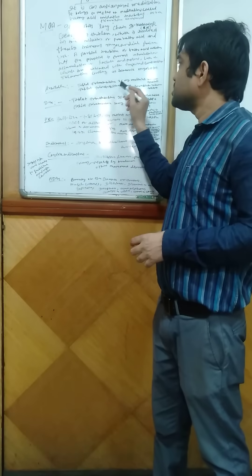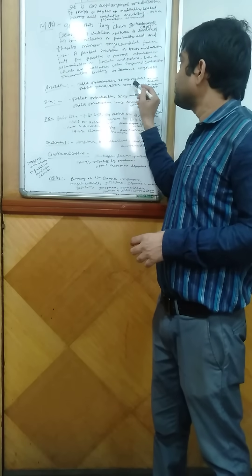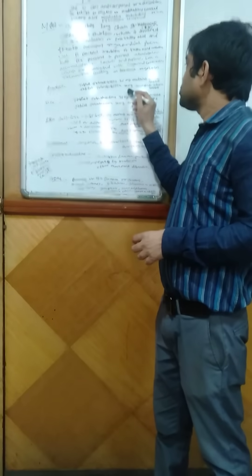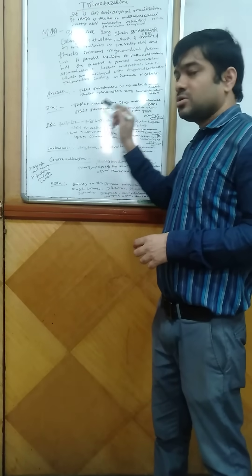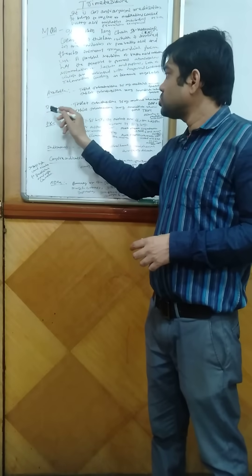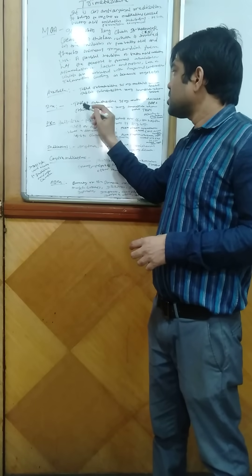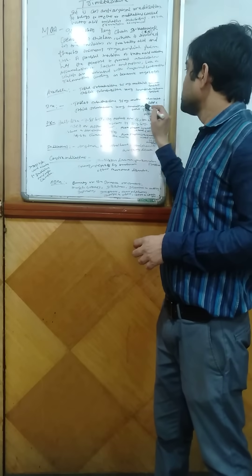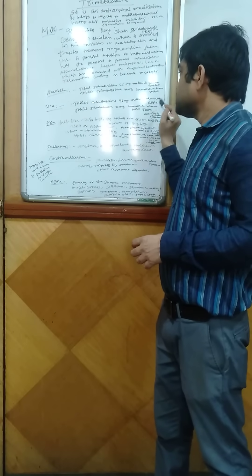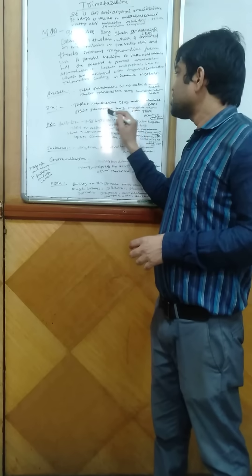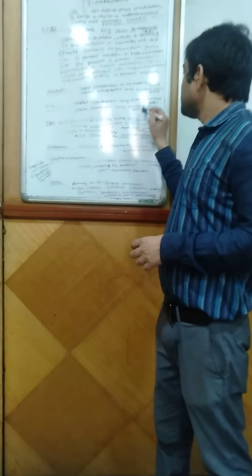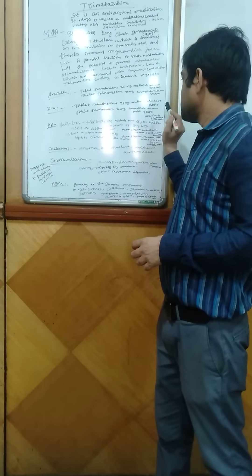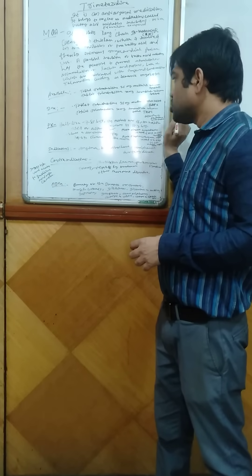Coming to the availability, it is available as tablet Trimetaghidine 35mg modified release or tablet Trimetaghidine 20mg immediate release tablet. Coming to the dose, the 35mg modified release tablet is given twice daily with food, and the 20mg immediate release tablet can be given three times daily with food, according to the guideline.